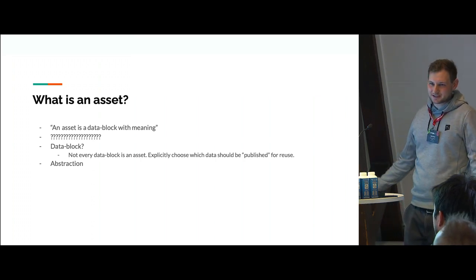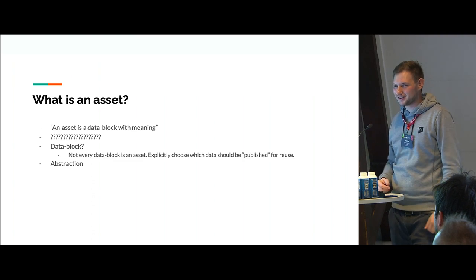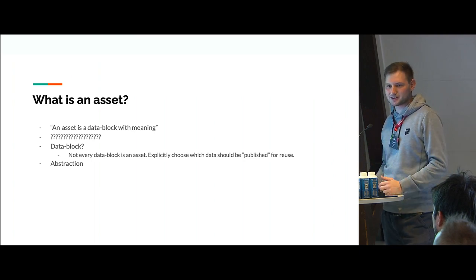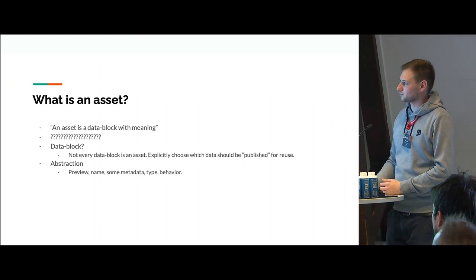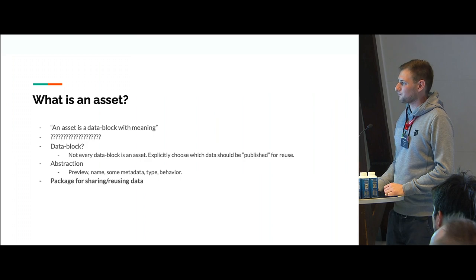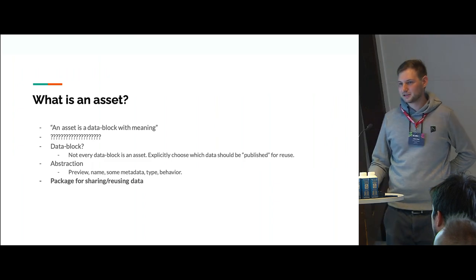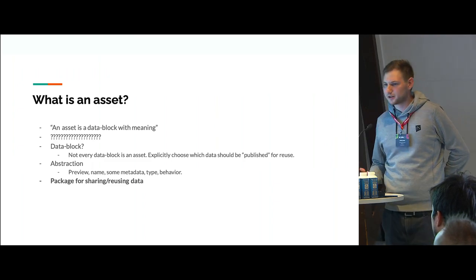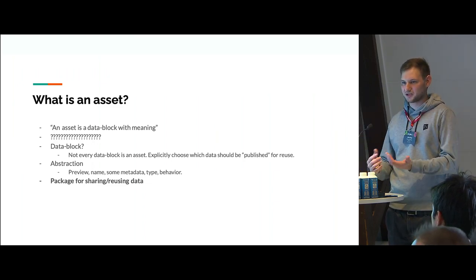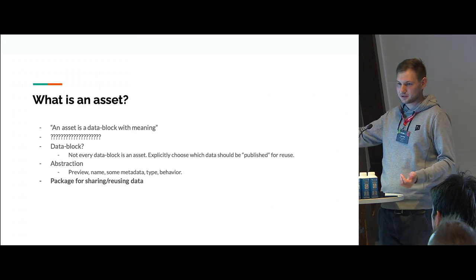An asset is an abstraction — you just want to see a bunch of previews, some names, be able to track things, maybe get some more information about the author, some tags, and be able to search for things. It has a preview, name, some metadata, type, behavior. I would describe what an asset is, at least for Blender, as: it's a package for sharing or using data. Like with mail — you get an envelope, put some metadata on it like the address, and send it away.